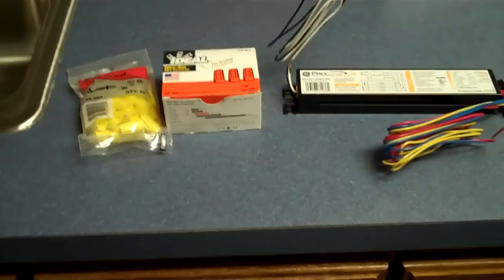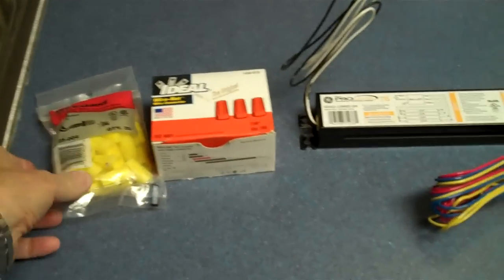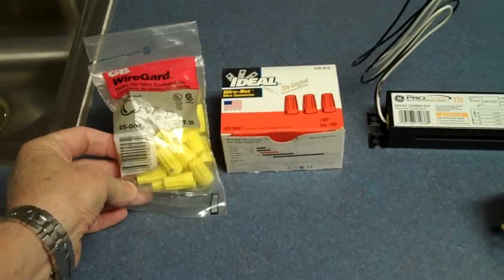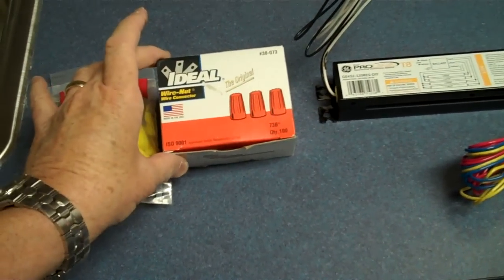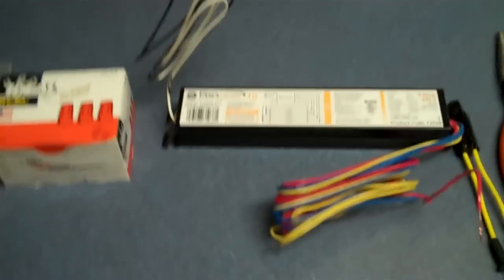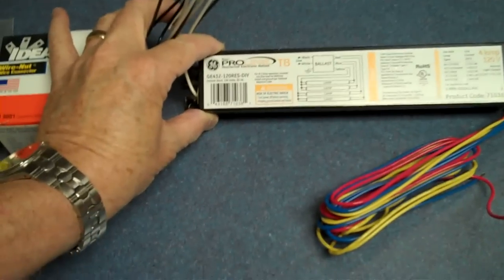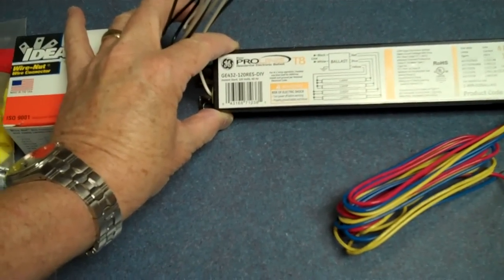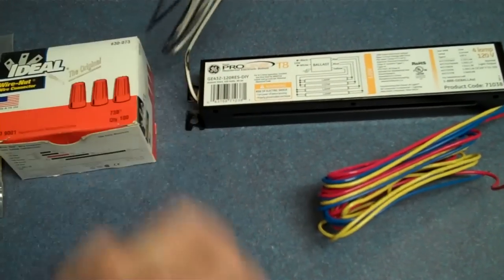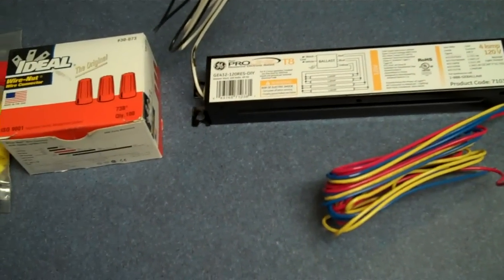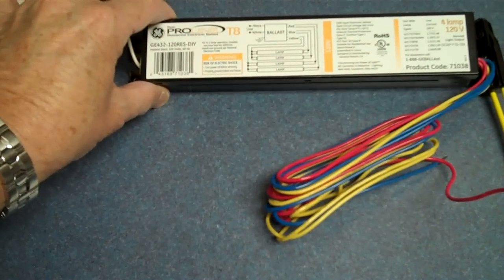Have some tools ready to start before you do this project. It's good to have a yellow wire nut, a couple of them, some orange ones. You're going to need your ballast and this particular one is a GE 432-120 residential, and this is a four bulb T8 ballast. They're all made in China, but this is probably one of the better ones.